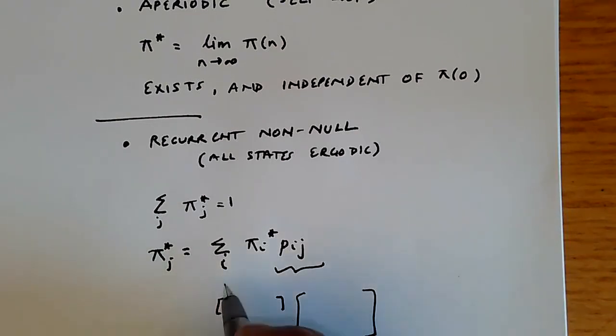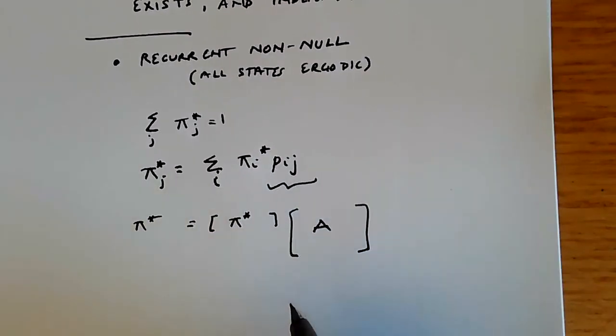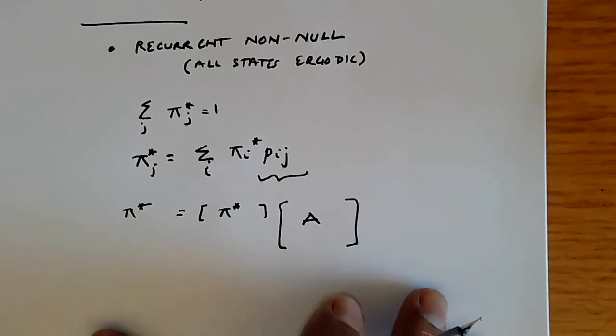So if you write it out over here, you'll find that this exactly is going to be the case. So if you take the row vector pi star, and over here you put the transition matrix A, then we'll get that pi star equals pi star times A.